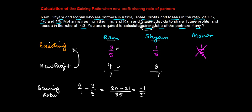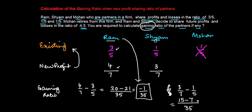Similarly, let's see for Sham. His existing ratio is 1/5, and his new ratio is 3/7. So 3/7 - 1/5 equals (15 - 7)/35 = 8/35.